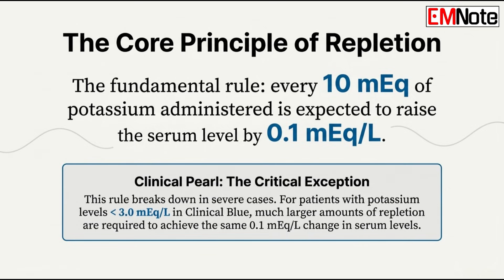How does that ratio change when we're talking about a potassium level below 3.0? Once you drop below 3.0 milliequivalents per liter, the amount of potassium you need just skyrockets. It's not a linear relationship anymore — it takes way more than 10 milliequivalents to get that same 0.1 bump. You're not just fixing the number in the blood; you're trying to fill a massive intracellular deficit. The serum level is just the tip of the iceberg. You're correcting total body depletion.